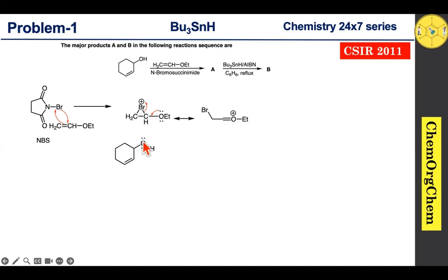Therefore, cyclohexenol readily attacks this center to produce the corresponding intermediate. After generation of this intermediate, it readily abstracts the proton by this imide ion to produce the corresponding product A.